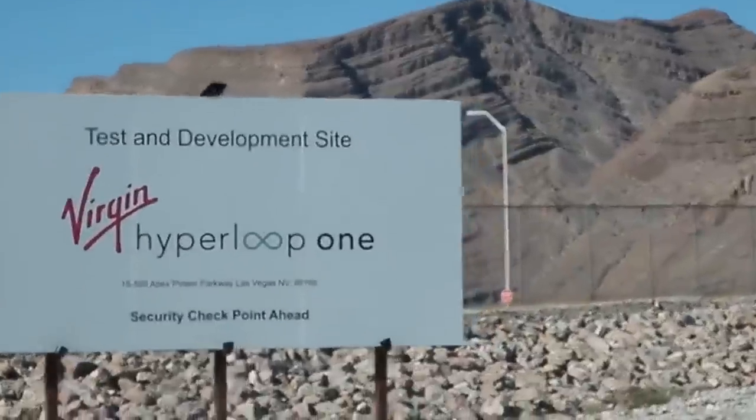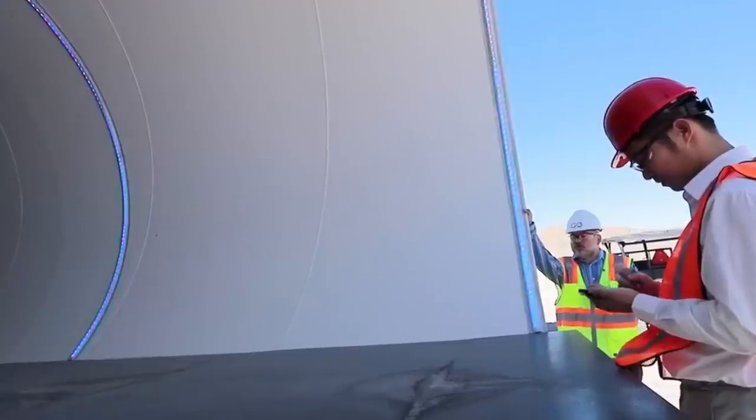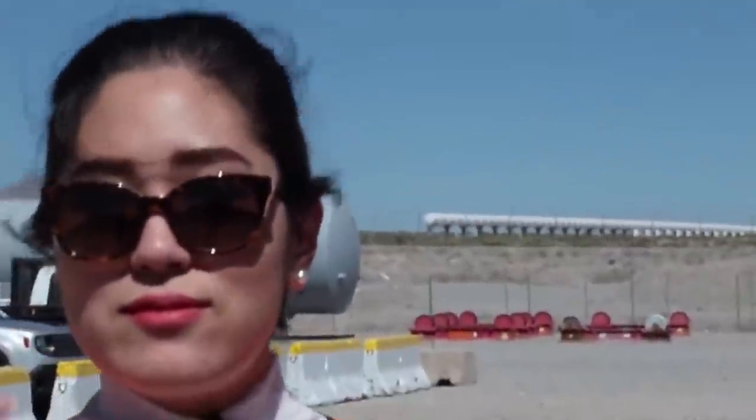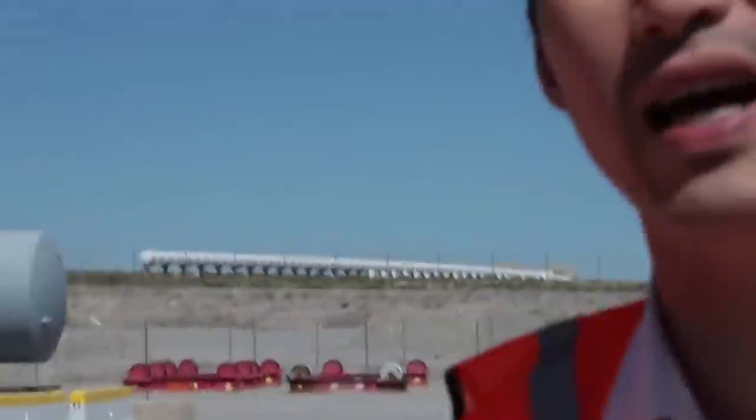He visited the Hyperloop test track in Nevada. This is a 500-meter test track. They have mock-ups. They have this test track. They moved two test subjects down this 500-meter test track. That is all Hyperloop has done so far. It will be years and years when and if the Hyperloop ever goes operational and starts moving passengers in the United States.